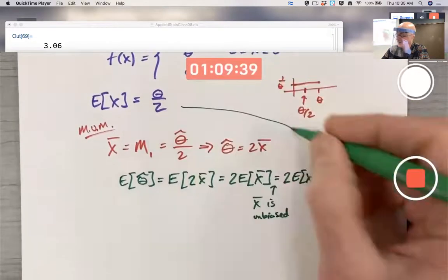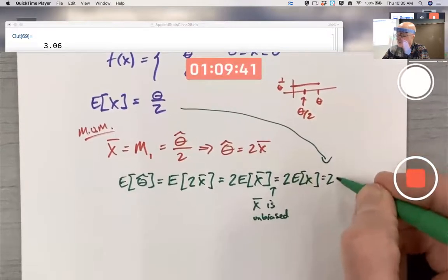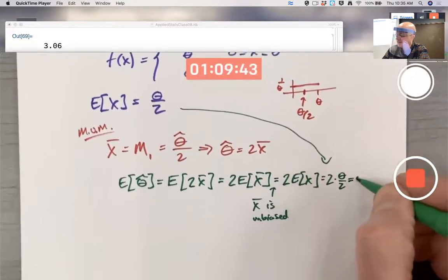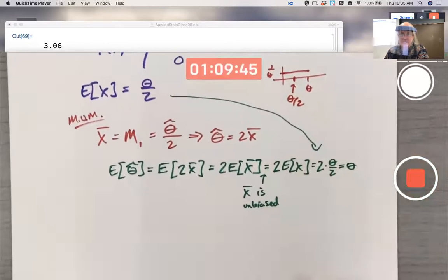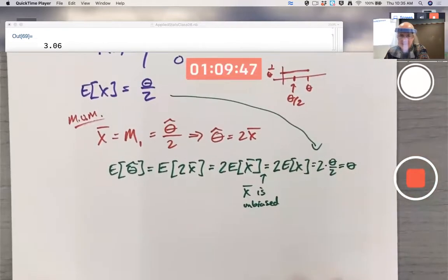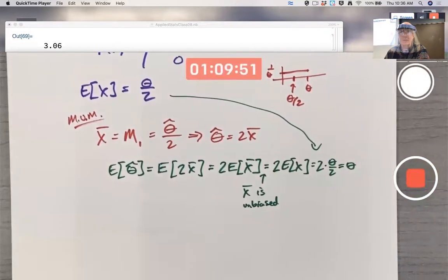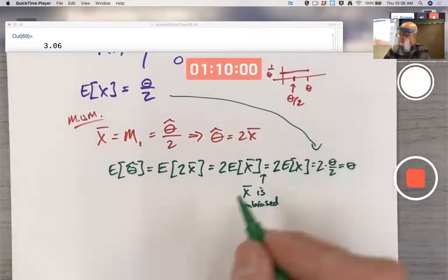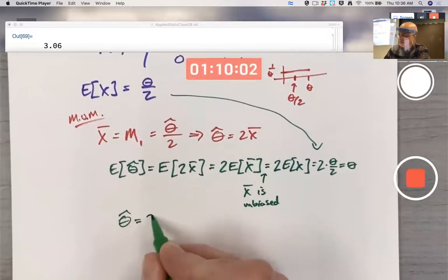But what is the expected value of X? It's theta over 2. So this becomes two times theta over 2. It becomes theta. It almost seems too dumb to be true, but this is a valid argument. It seems like you're going in circles here. And this proves theta hat equals two X bar is unbiased.